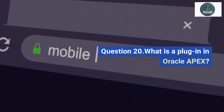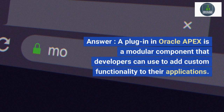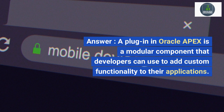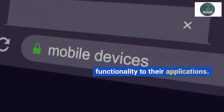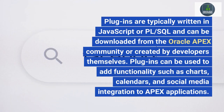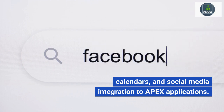Question 20. What is a plugin in Oracle Apex? Answer. A plugin in Oracle Apex is a modular component that developers can use to add custom functionality to their applications. Plugins are typically written in JavaScript or PL/SQL and can be downloaded from the Oracle Apex community or created by developers themselves. Plugins can be used to add functionality such as charts, calendars, and social media integration to Apex applications.